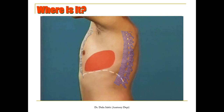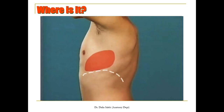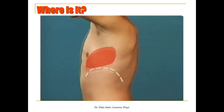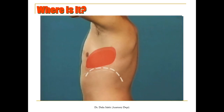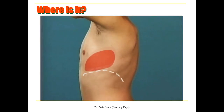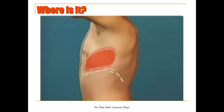Since the heart lies above the diaphragm, it can move up and down during respiration with the movement of the diaphragm. So in expiration, the diaphragm moves upward, and also the heart. And with inspiration, the diaphragm moves downwards, and the heart also moves downwards with it.